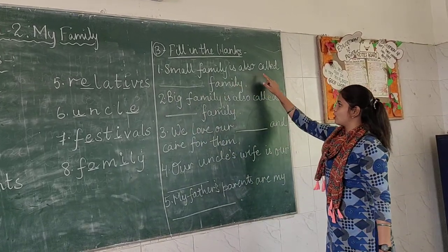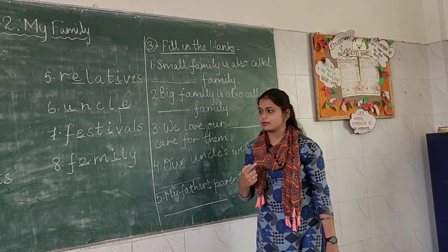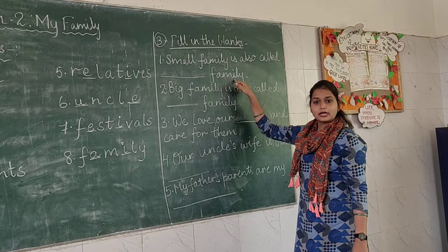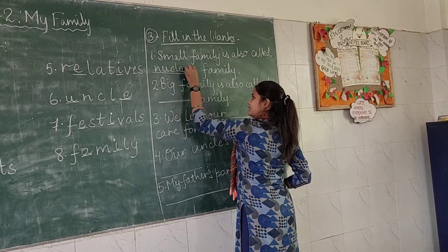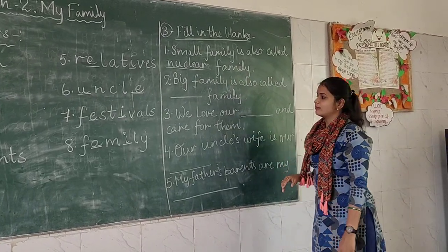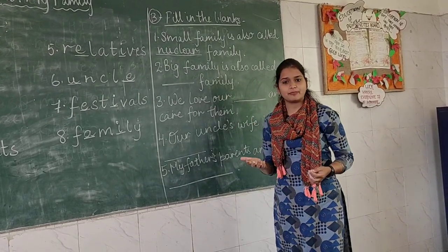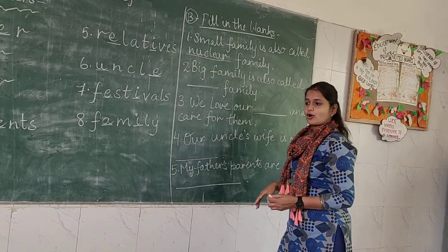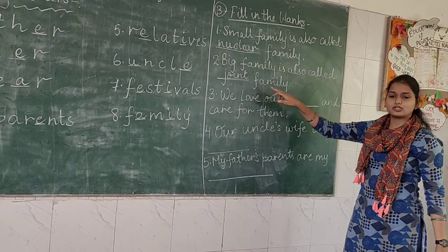Fill in the blanks — let's get started. First: 'Small family is also called a dash family.' A small family is called a nuclear family. The spelling of nuclear is N-U-C-L-E-A-R. Second: 'Big family is also called dash family.' A big family is also called a joint family. The correct spelling is J-O-I-N-T — joint.